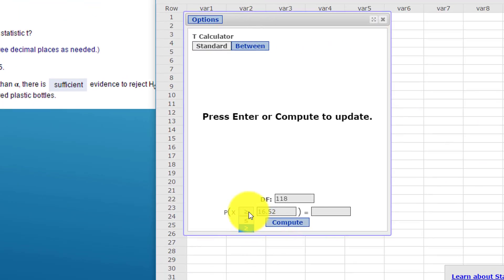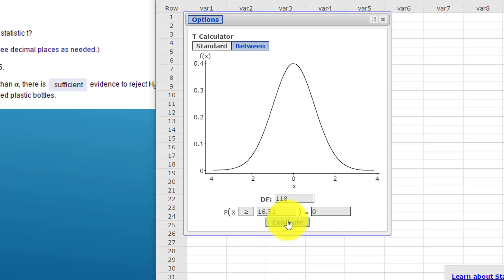We want to make sure that we have the right tail and we click on compute. We get a p-value of zero. And I shake my head and I say zero—that's unusual that we would get a p-value of exactly zero. Let's just pause for a moment.